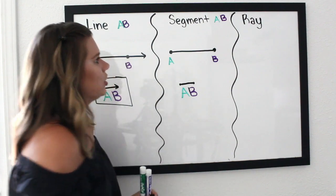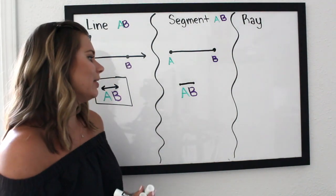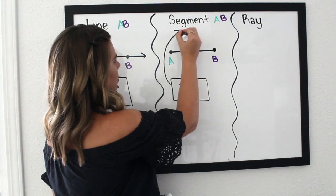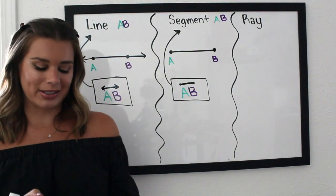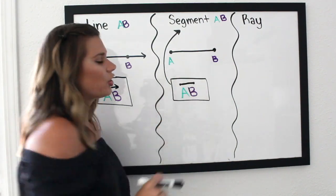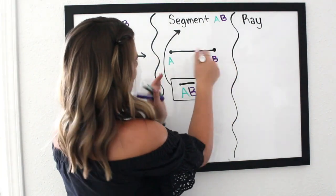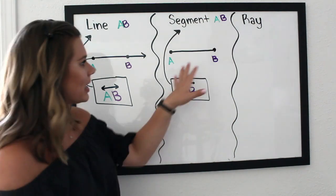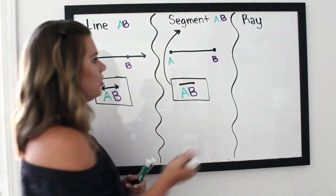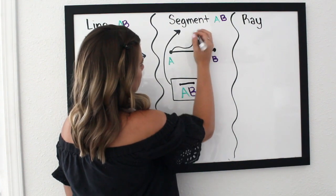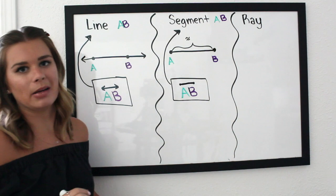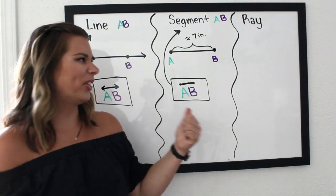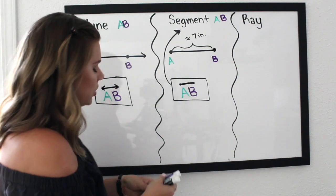When talking about a segment, you use its endpoints in the notation — this is segment AB. Here's the tricky part: with a segment you can pull out a ruler and measure its length. For example, let's say it's about seven inches long — so the length of segment AB is approximately seven inches.